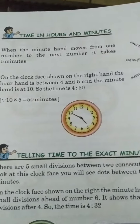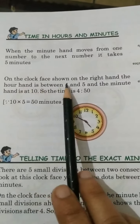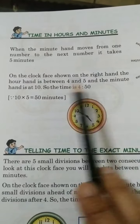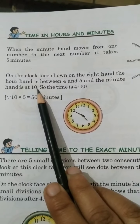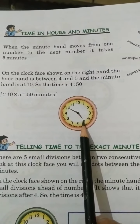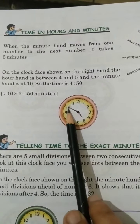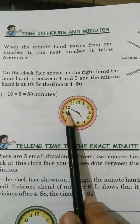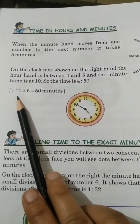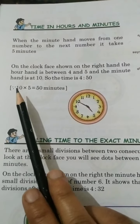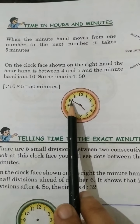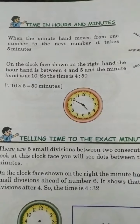Now let us read the clock shown. The hour hand is between 4 and 5, and the minute hand is at 10. Since the hour hand is about to reach 5, the hour is 4. The minute hand is on 10, so 10 multiplied by 5 equals 50 minutes. Therefore the time is 4:50.